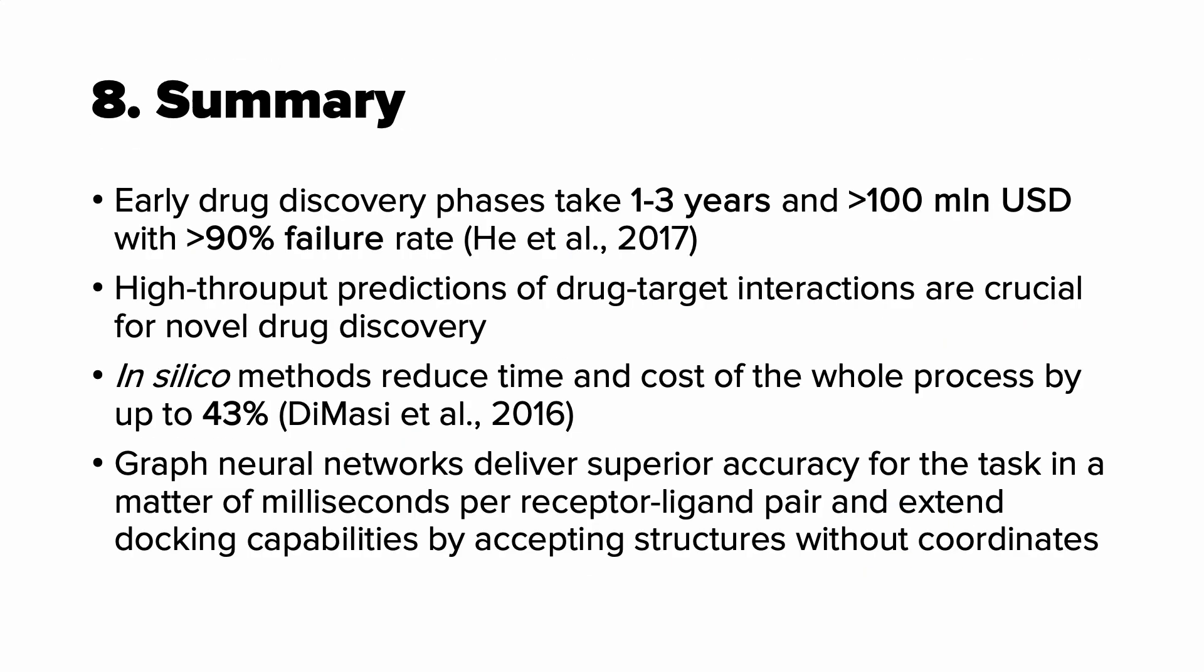Let's make the conclusions now. First, early drug discovery, which is the target of this review, usually takes something around one to three years and almost 200 million dollars with 90% of failure. High throughput prediction of drug target interactions are crucial for novel drug discovery. They allow us to shorten the list of compounds for experimental testing. In silico means computational methods reduce time and cost of the whole process by up to 33%. And graph neural networks deliver superior accuracy for the task in a matter of milliseconds per receptor ligand pair and extend docking capabilities by accepting structures without coordinates.